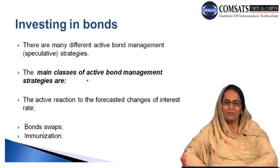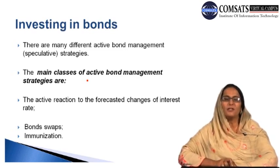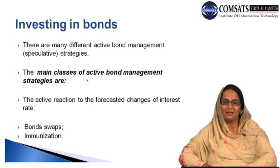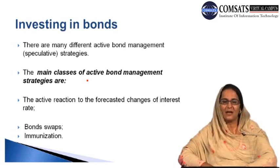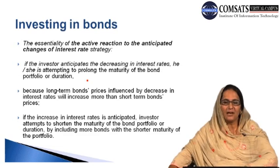The main classes of active bond management strategies include active reaction to forecast changes of the interest rate. If there is a prediction about future fluctuations in the rate of interest and the yield of the bonds, there may be an immediate — essentially speculative — response by the investor. These types include bond swaps, immunization, and active reaction to anticipated changes in the interest rate.